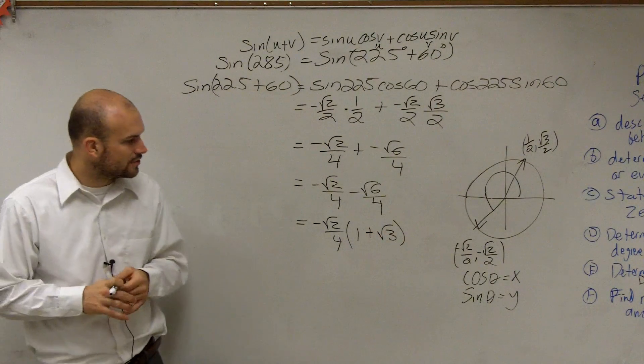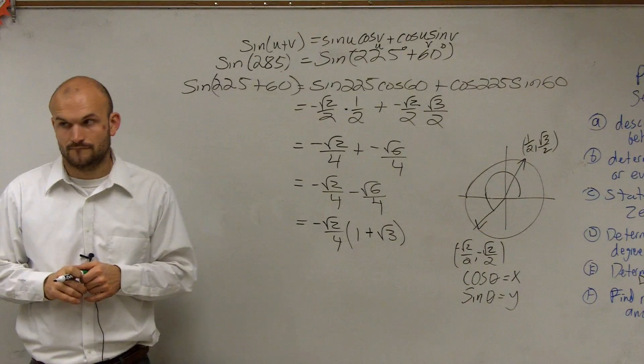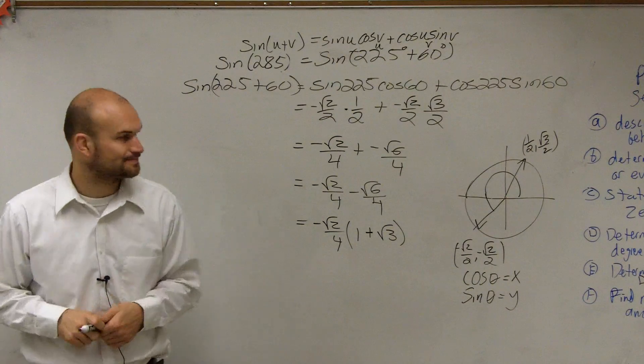So I have -√2/4 factored out, times (1 + √3). Same? Awesome. Okay.